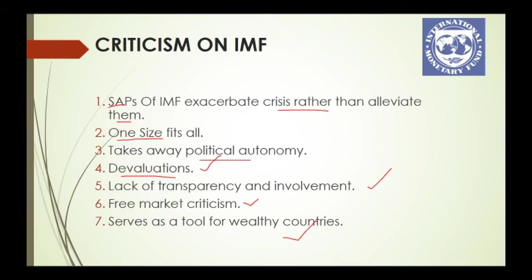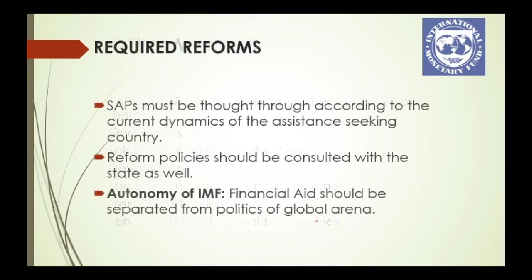Proposed reforms for IMF include: Structural Adjustment Programs must be designed according to the specific current dynamics of the assistance-seeking country to help achieve long-term stability. Reform policies should be consulted with the state to make them work properly. The autonomy of IMF financial aid should be separated from global political pressures. That covers everything — thank you very much.